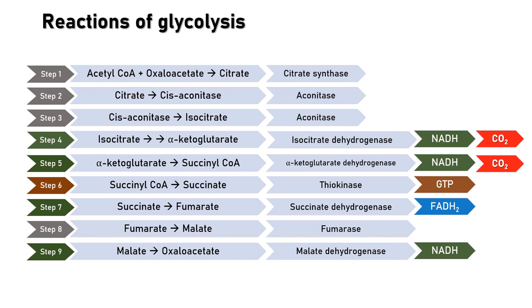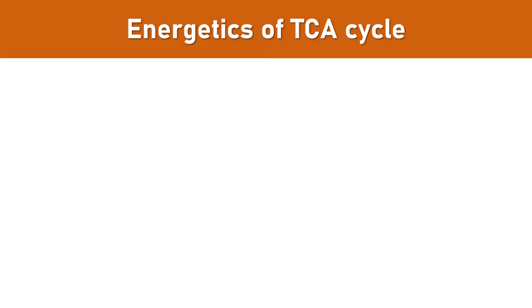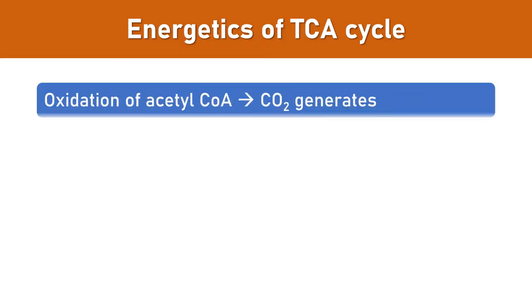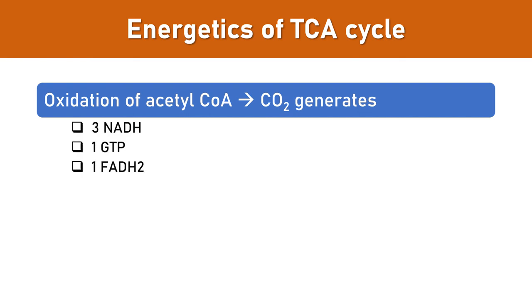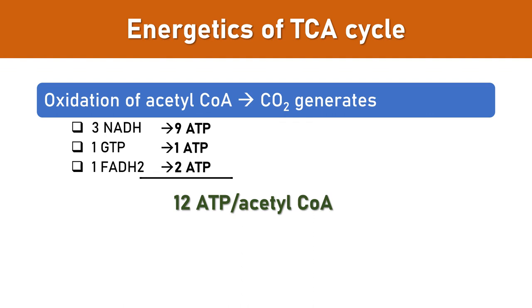The energetics: oxidation of acetyl-coenzyme A to carbon dioxide generates reducing equivalents as well as GTP. 3 NADH, 1 GTP, and 1 FADH2 are synthesized per cycle. 3 NADH gives 9 ATP, GTP gives the equivalent of 1 ATP, and FADH2 gives 2 ATP — for a total of 12 ATP molecules synthesized per molecule of acetyl-coenzyme A oxidized through the TCA cycle.